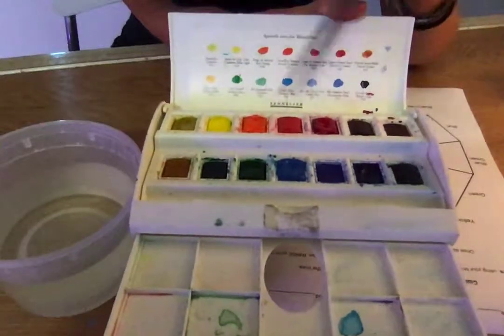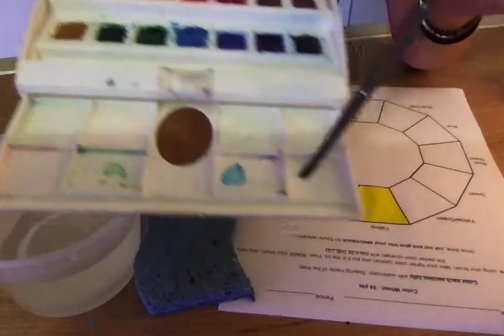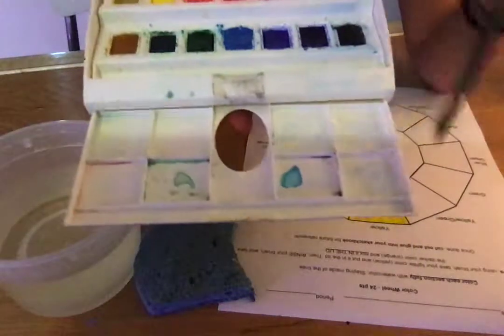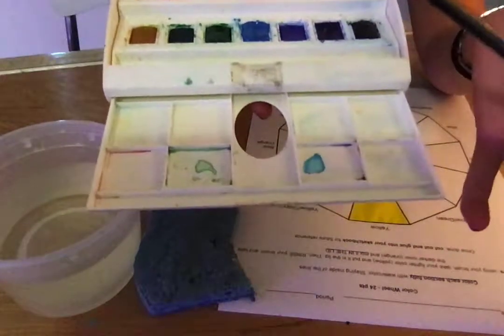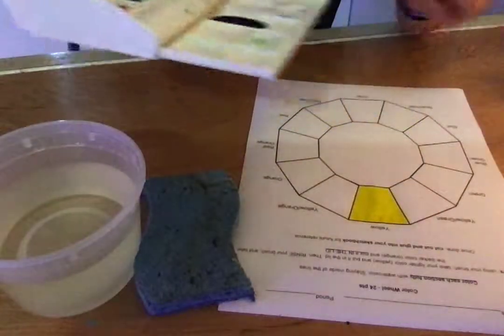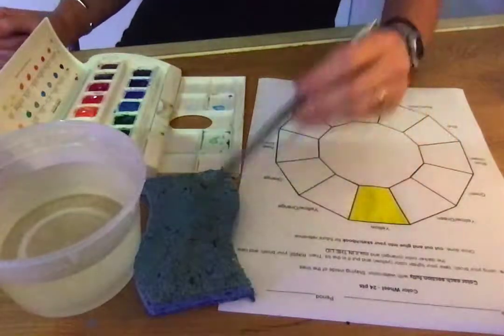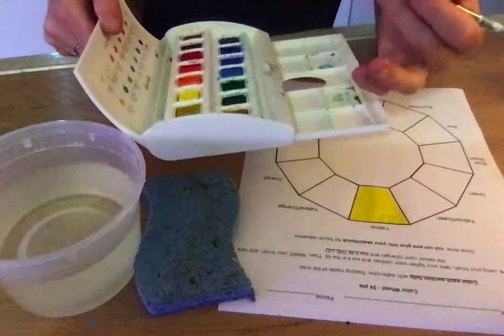You're actually going to mix it into the lid. So watercolor palettes always have this lovely built-in mixing tray—that's what you're gonna use. So in order to do that, I'm gonna make sure I have a clean brush. Always when you're dipping into your palette pigments, you're always gonna have a clean brush.